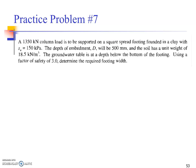The footing is founded in clay with undrained strength of 150 kilopascal. The depth of embedment D will be 500 millimeters, and the soil has a unit weight of 18.5 kilonewtons per cubic meter. The groundwater table is at a depth below the bottom of the footing. Using a factor of safety of three, determine the required footing width.